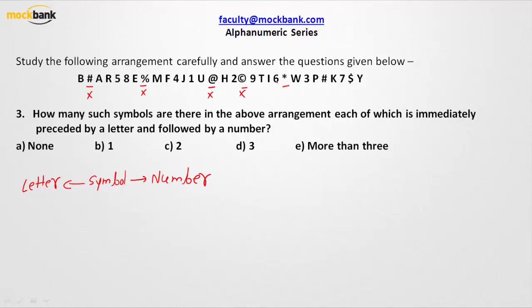The asterisk is preceded by a number and followed by a letter — that is the reverse of what we are looking for. Another symbol is preceded by P and followed by K — both are alphabets, not the case. The dollar mark is preceded by seven and followed by Y, which is a letter — also not the case. Since there is no such symbol, the answer is option A (none).